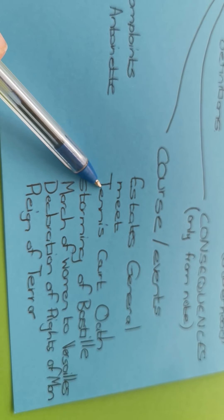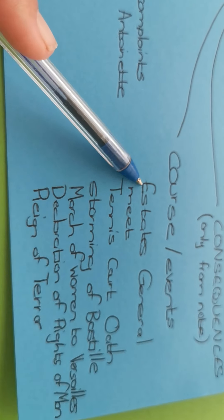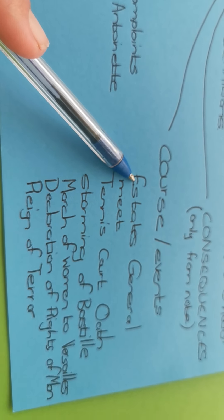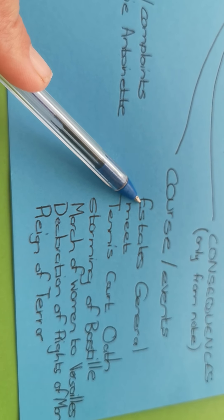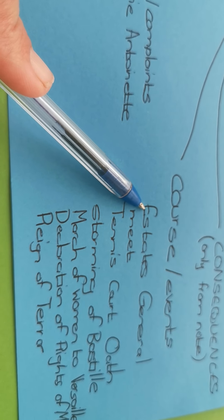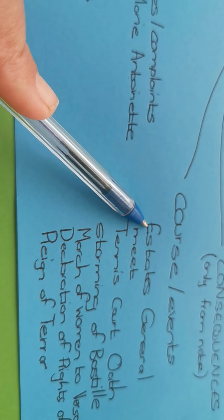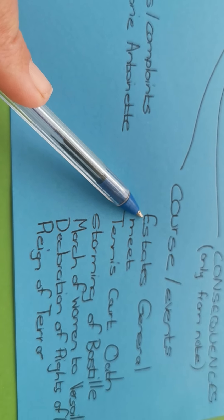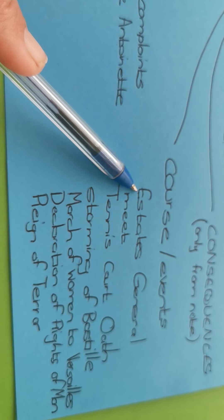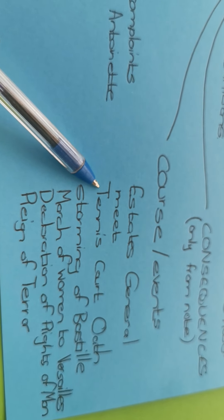Then we get the Tennis Court Oath. With the Tennis Court Oath, the Estates General is upset because they can only vote as a block. So the first estate is going to get one vote, the second estate is going to get one vote, and the third estate is going to get one vote. Obviously, the third estate is going to get outvoted, so they're not happy with that. They go to an indoor tennis court and they say, I'm never leaving here until change happens.